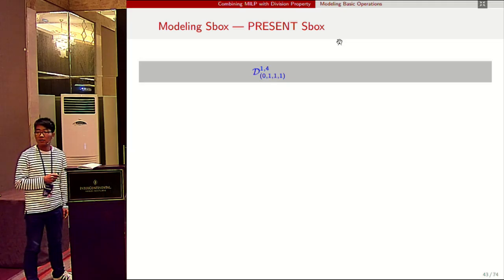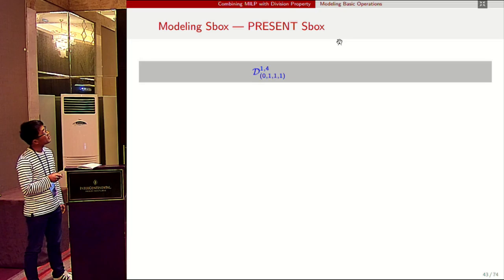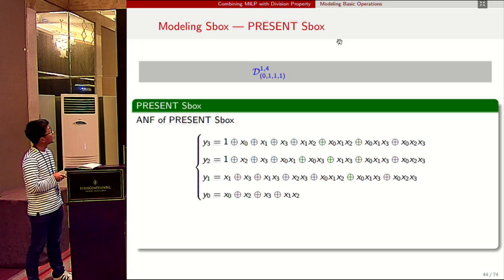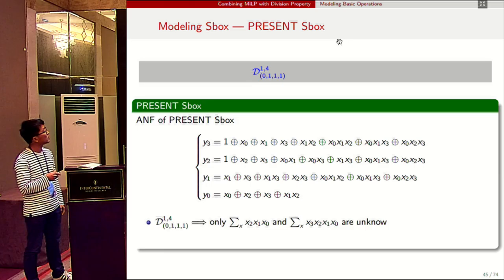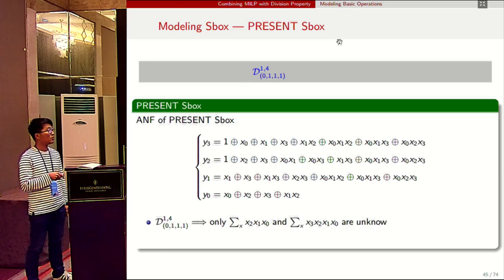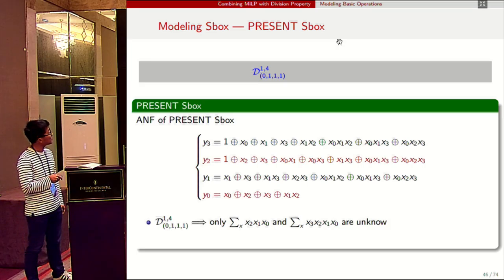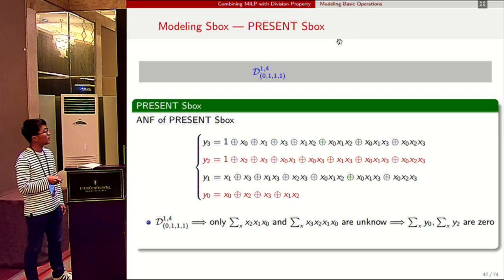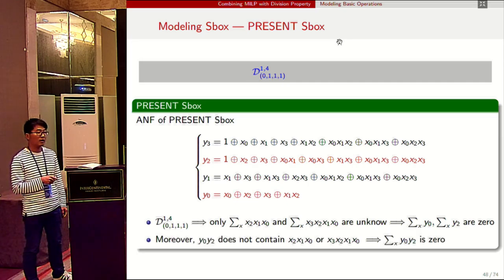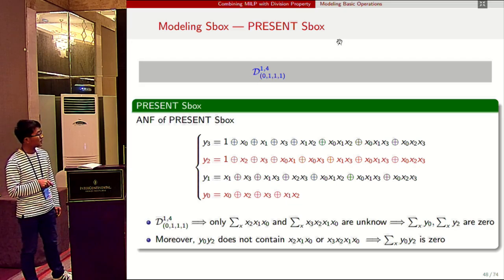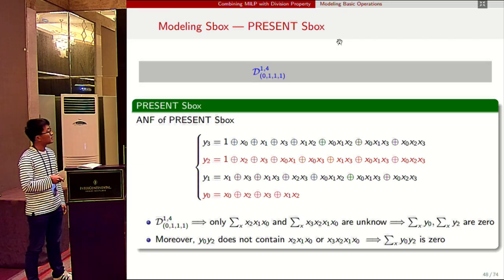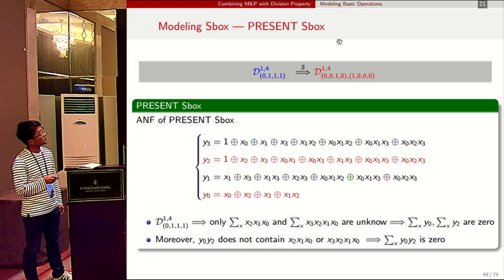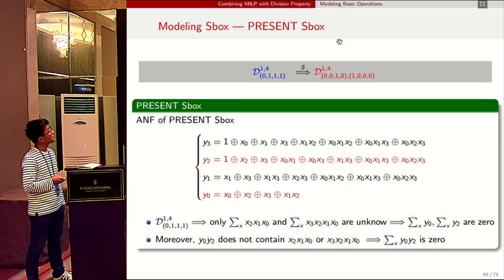Next, we show how to model an S-box, taking the PRESENT S-box as an example. Given an input division property, we calculate the algebraic normal form of the PRESENT S-box. From this input division property, only the sum of certain monomials is unknown. We observe that y_0 and y_2 do not contain these monomials, so the sum of y_0 and y_2 is zero. Moreover, y_0 times y_2 also does not contain these monomials, so its sum is also zero. Based on these observations, the output division property should be D_{(0,0,1,0)} and D_{(1,0,0,0)}.